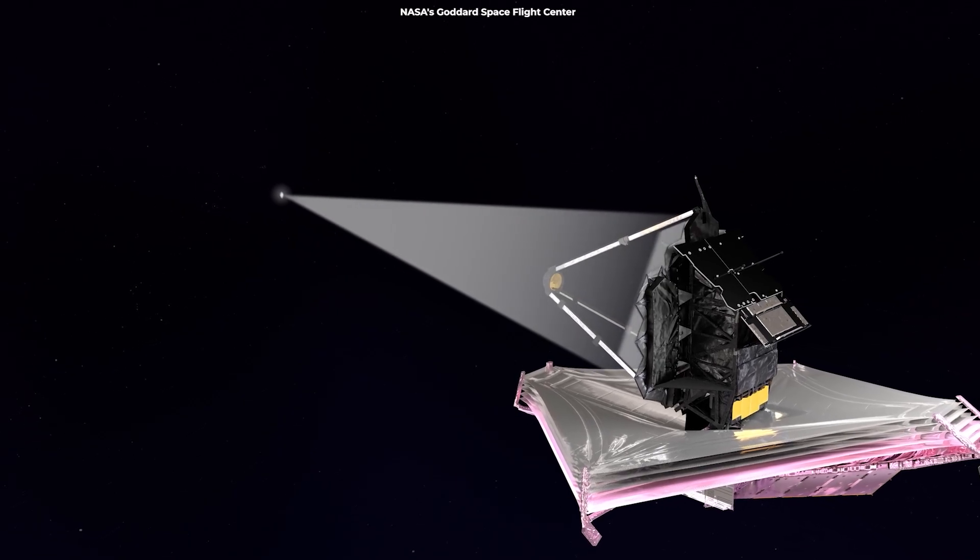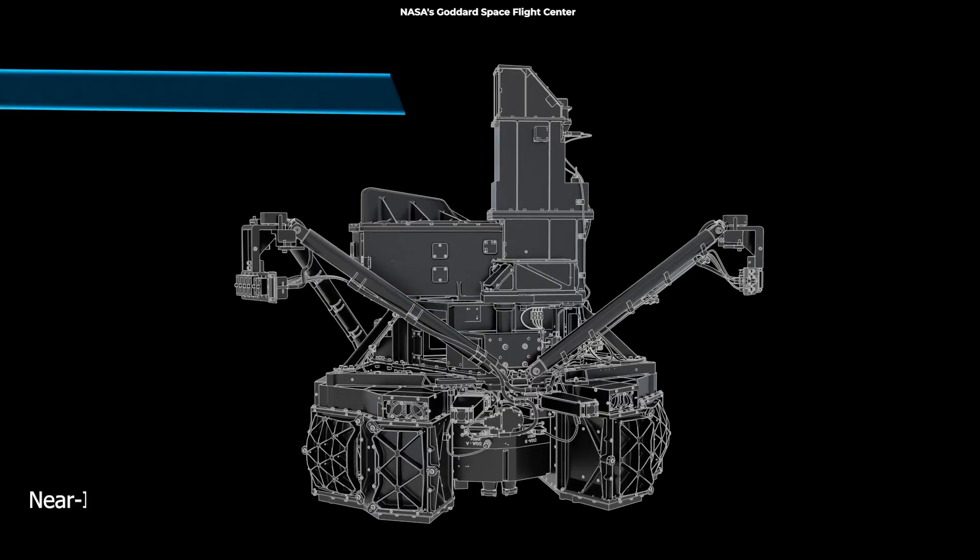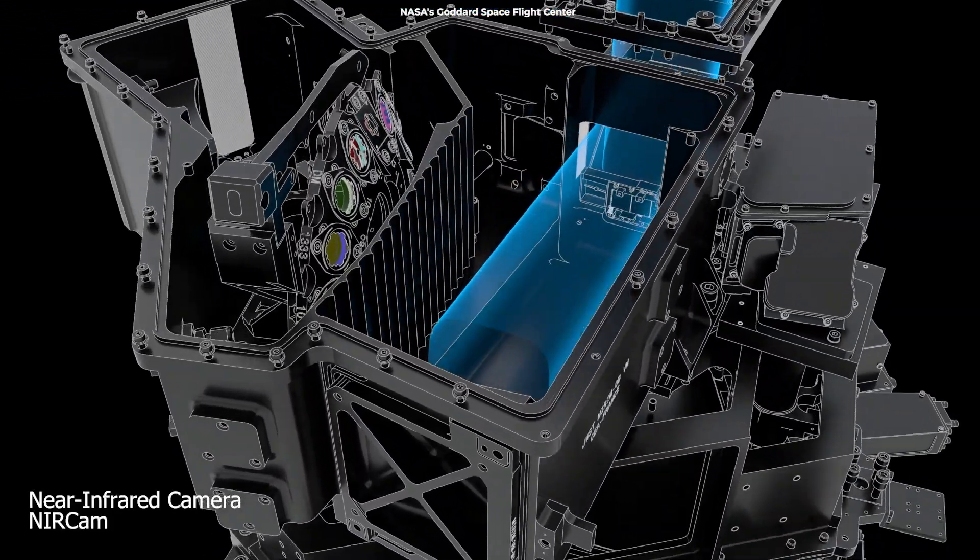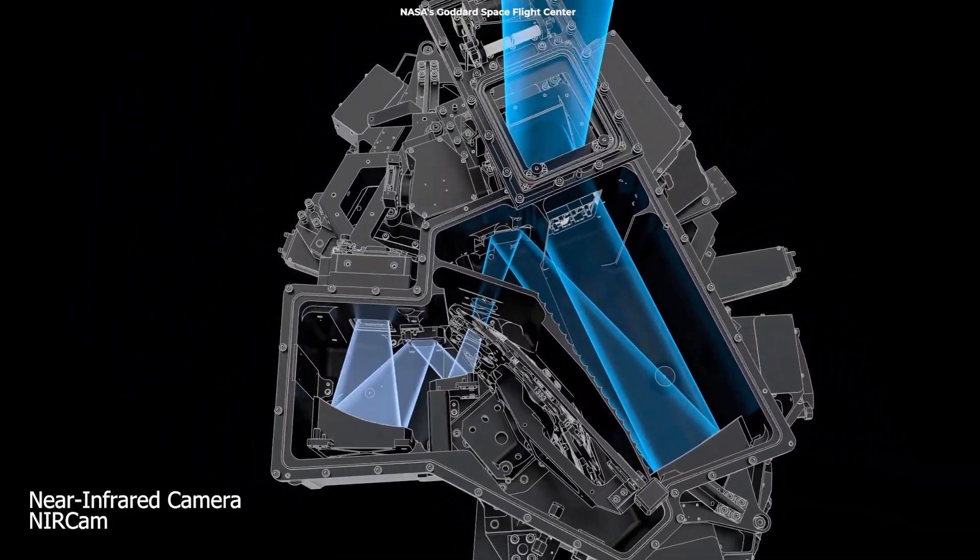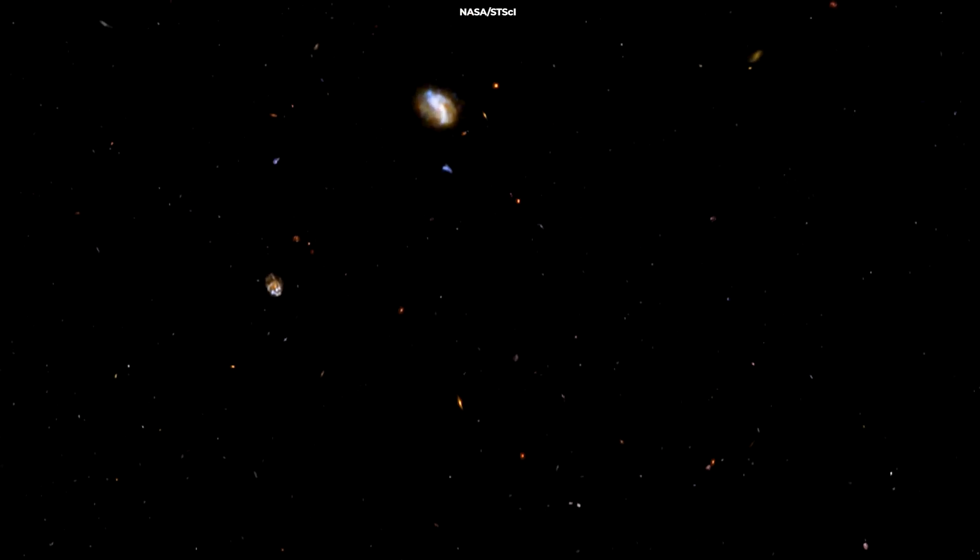Webb is specially designed to detect this redshifted light. Its near-infrared camera, or NIRCam, can pick up infrared light that's invisible to the human eye. This allows us to see these ancient galaxies as they were just a few hundred million years after the universe began.